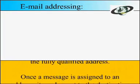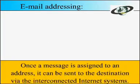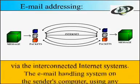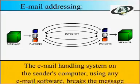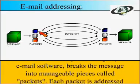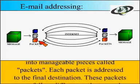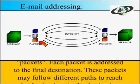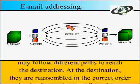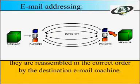Once a message is assigned to an address, it can be sent to its destination via the interconnected internet system. The email handling system on the sender's computer, using any email software, breaks the message into managed pieces called packets. Each packet is addressed to the final destination. These packets may follow different paths to reach the destination. At the destination, they are reassembled in the correct order by the destination email machine.